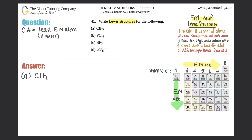Between chlorine and fluorine, chlorine is the less electronegative element, so chlorine goes in the center surrounded by the three fluorines. Always double-check, because sometimes it can look one way but be different. So we have Cl in the middle with one F here, one F here, and one F here.